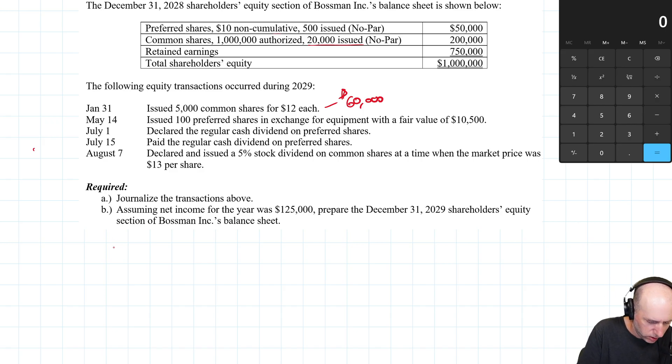And so what does that look like? Well, January 31st, we got cash. Now, when we issue shares for $12, the assumption here is they paid us in cash. So, we're issuing shares, they're giving us cash, debit cash, credit common shares.